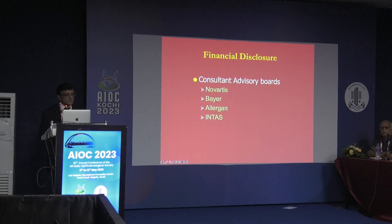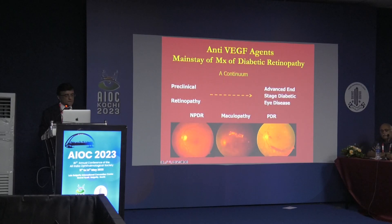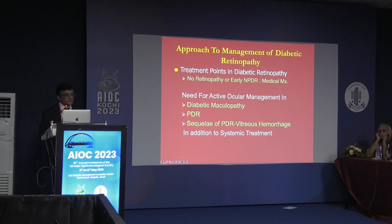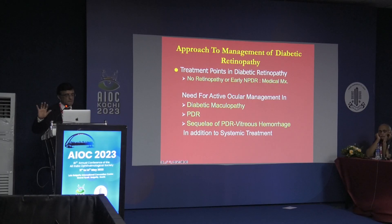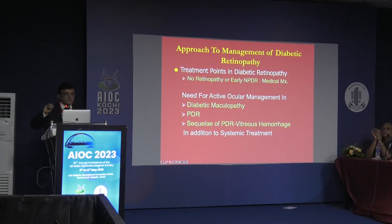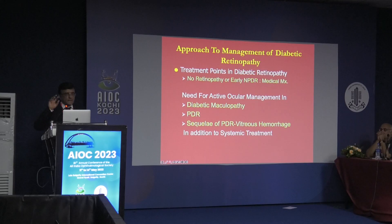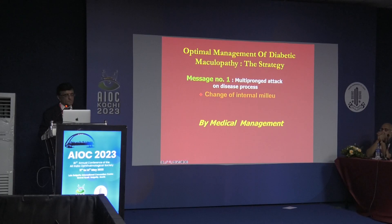There are 11 take-home messages. We know that there is NPDR, maculopathy, and proliferative diabetic retinopathy. The approach to the patient is: if we do not have retinopathy or have early NPDR, we must do medical treatment. If you have diabetic maculopathy or PDR, we have to treat these patients medically by intravitreal injections. All these patients must be controlled metabolically well. We must give anti-VEGF injections and treat them surgically wherever required.